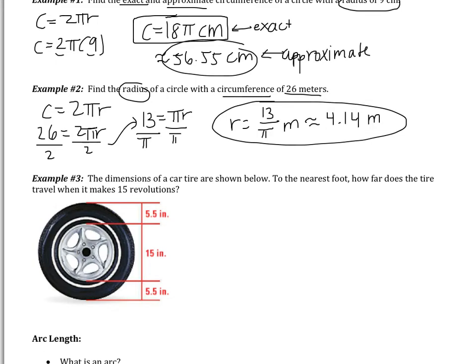Example number 3: the dimensions of a car tire are shown. To the nearest foot, how far does the tire travel when it makes 15 revolutions? My tire is spinning again and again — making 15 revolutions. Each revolution is going to be one circumference, one way around. My tire starts here, goes all the way around, and comes back to its original spot — that's one revolution, which is just a circumference — but it's going to do it 15 times. So I need to find 15 circumferences. Pause the video and try this one on your own.